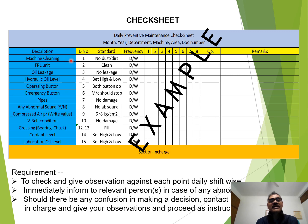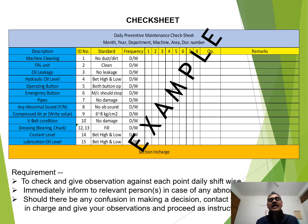We can give each item an identification number, and we can also mark that number on the machine itself so it is easier for the operator. For example, for the FRL unit we have given identification number two, so on the FRL unit we can stick a sticker marked two. The standard for each item is also listed — for example, for machine cleaning there should not be any dust or dirt. We define the frequency as daily or weekly depending on the requirement, and dates are provided alongside.